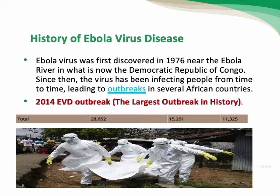From that time, Ebola virus disease became the leading cause of frequent outbreaks in several African countries. In 2014, the Ebola virus disease outbreak was the largest in history. The total number of probable and confirmed cases was around 28,652, with 15,261 laboratory-confirmed results, and 11,325 total deaths.